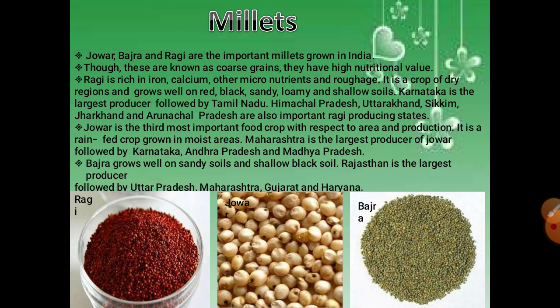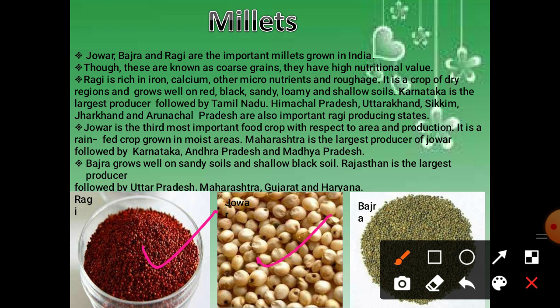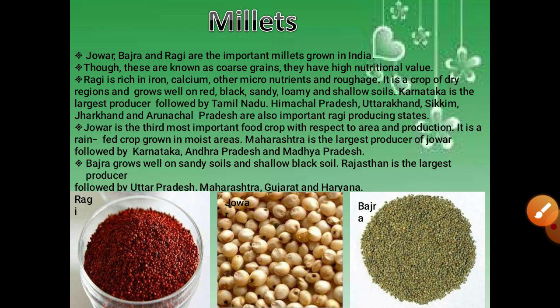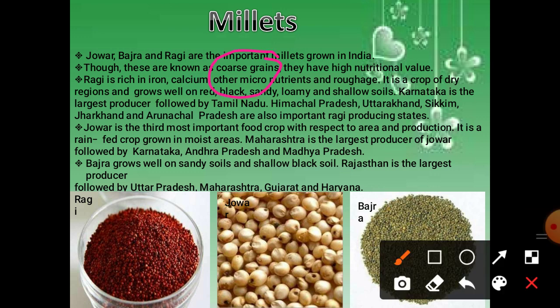After wheat, there are millets, called coarser grains. Millets include ragi, jowar and bajra — different kinds of grains of various sizes. Jowar, bajra and ragi are the important millets grown in India. They have high nutritional value. Ragi is rich in iron, calcium, other micronutrients and roughage. It is a crop of dry regions and grows well on red, black, sandy, loamy and shallow soils. Karnataka is the largest producer of ragi, followed by Tamil Nadu, Himachal Pradesh, Uttarakhand, Sikkim, Jharkhand and Arunachal Pradesh.